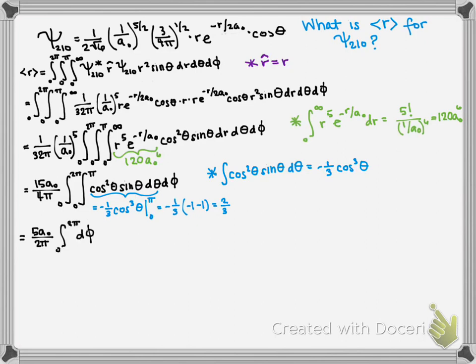And then we still have to deal with our integral over theta, which is simply integrate dθ from 0 to 2π, which turns out to just equal 2π. And so when we simplify this, we get the average value of r, the average distance of the electron from the nucleus is 5a₀, or 5 times the Bohr radius, which is a very, very small number.